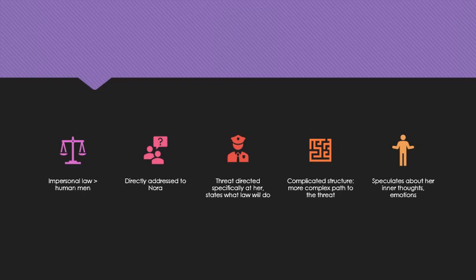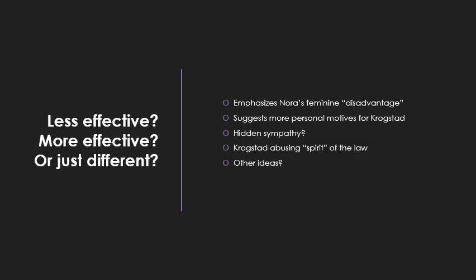'...I have never known our courts to consider the frivolities of a woman's heart as reliable evidence. They will only care about what you have done, Mrs. Helmer — the bare, brutal truth of your crimes.' In this version I've changed the impersonal 'law' to human 'men of justice,' addressed Nora directly, stated what the law will do, and made the structure more complicated — he meanders more to get to the threat.